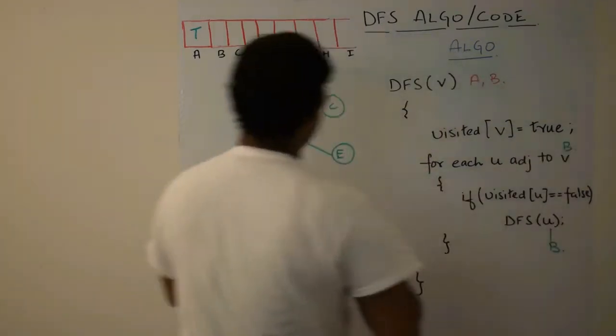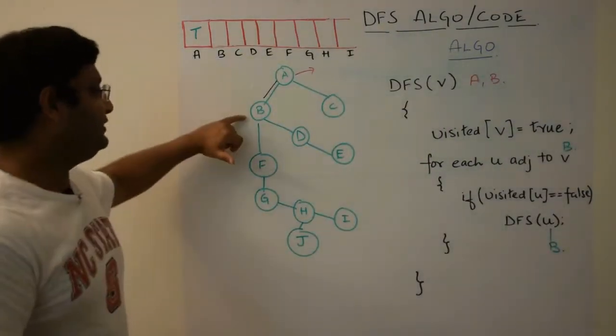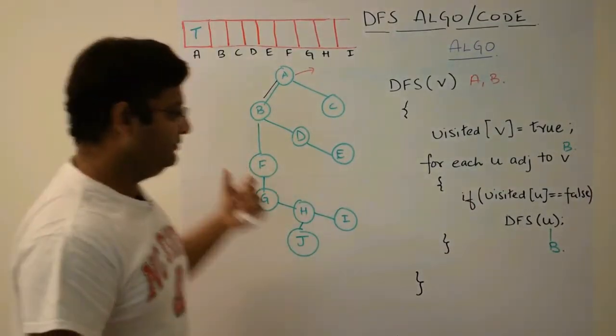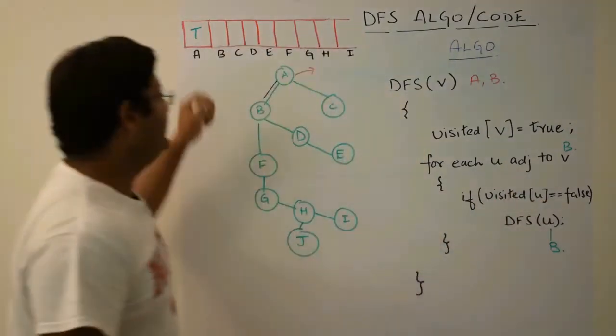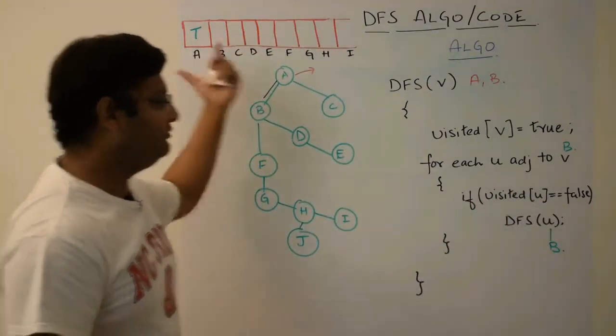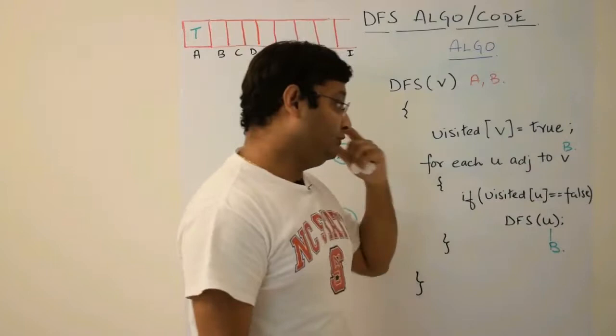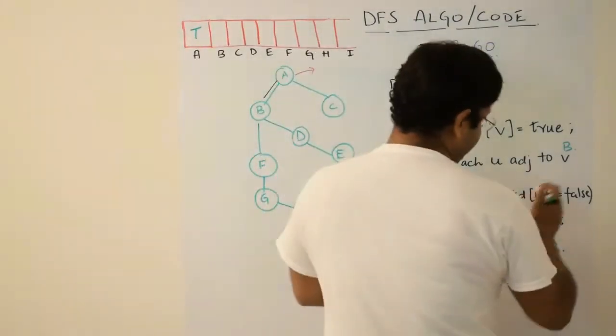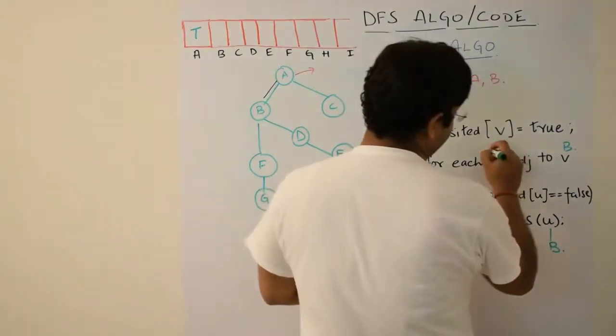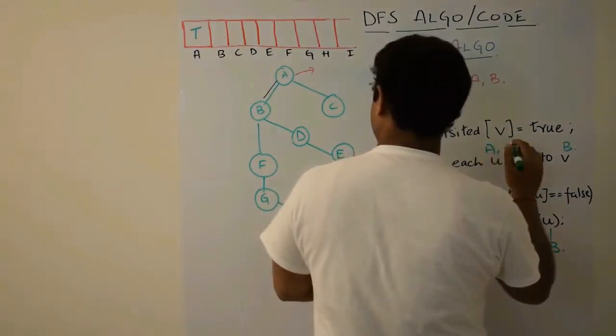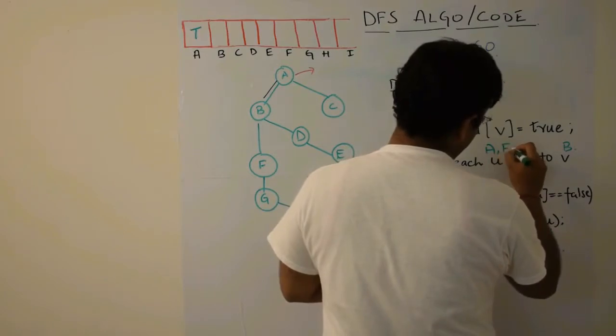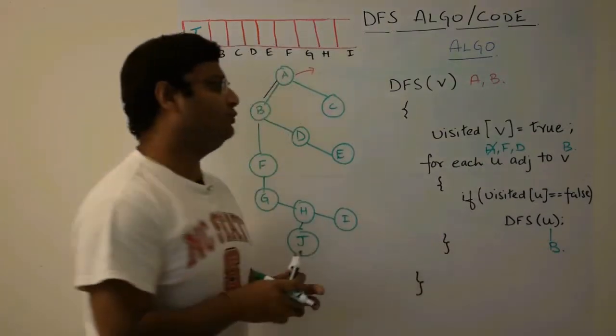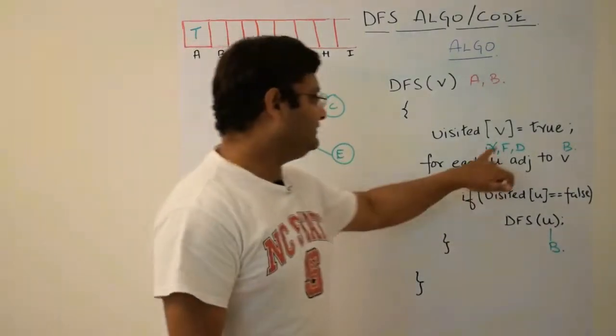Now let's trace B. So here now we are at B. We could have also chosen C. In that case, we would have gone different DFS result. As I told in the previous lecture, there may not be a unique DFS for a particular graph, even when the input node is same. Now what will happen here? It is B. For all U adjacent to B, V is nothing but B. So what are the nodes which are adjacent to B here? A, D and F. Now if visited, we will definitely keep aside A because A has already been visited. So basically what are the nodes which are left? Basically D and F.